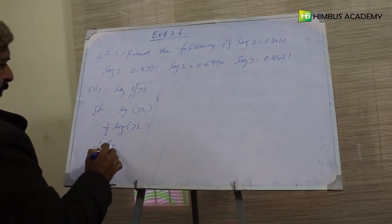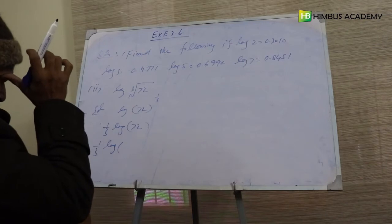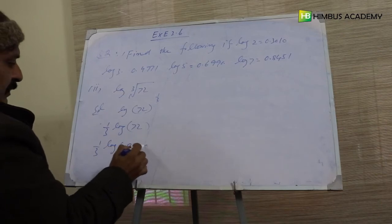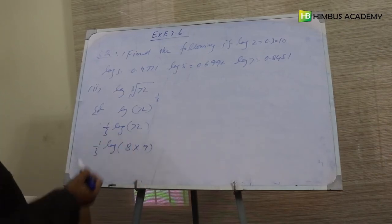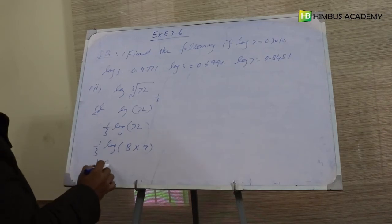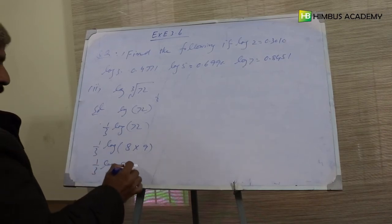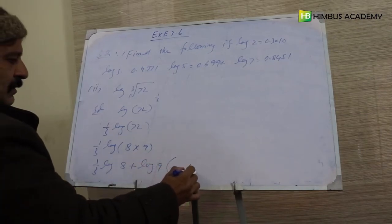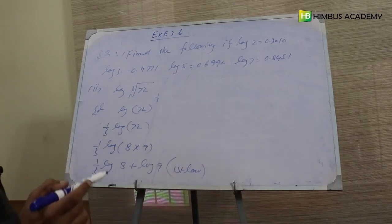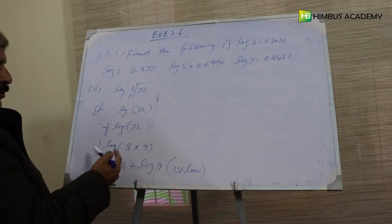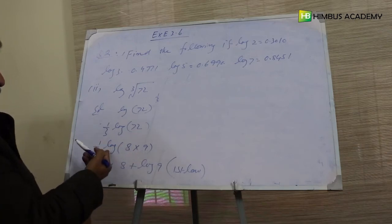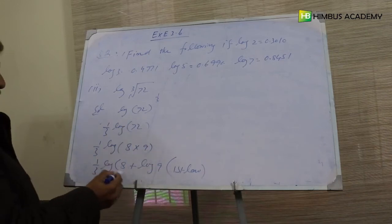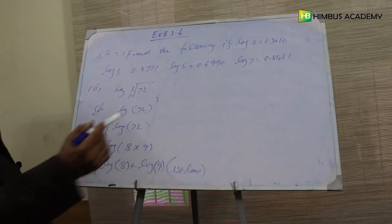Log of 72 کو ہم مزید split کر سکتے ہیں: 72 = 8 × 9. So we get one over three times (log of 8 plus log of 9). یہ first law ہے — جب دو numbers کا multiplication ہو تو log of first plus log of second. اب log of 8 کو ہم لکھ سکتے ہیں log of 2 cube۔